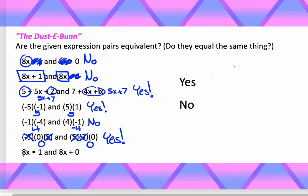And then the bottom, what do we have here? We have 8x times 1. You take anything times 1, it's like nothing happens. So this turns into 8x. We have 8x plus 0. That's like nothing happens. So this is also 8x. So down here we have a yes.